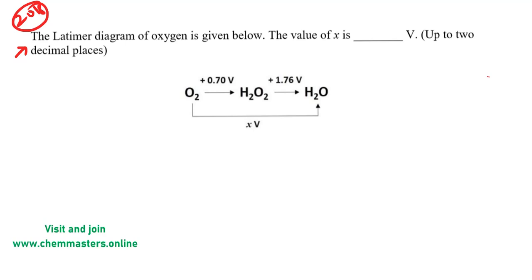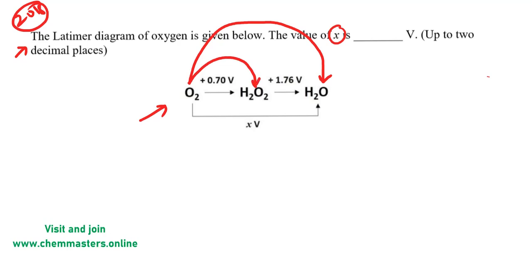The Latimer diagram of oxygen is given below and the value of x is to be found. Just look at the given Latimer diagram. The conversion of molecular oxygen to water involves two steps: the conversion of O₂ to H₂O₂ with a standard reduction potential of +0.70 volts, and H₂O₂ to H₂O with a standard reduction potential of +1.76 volts.